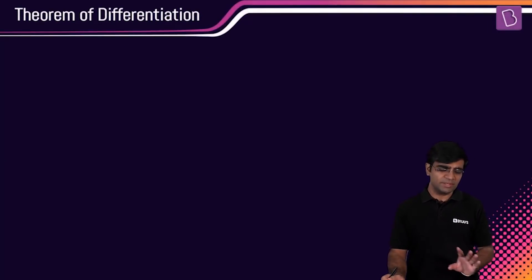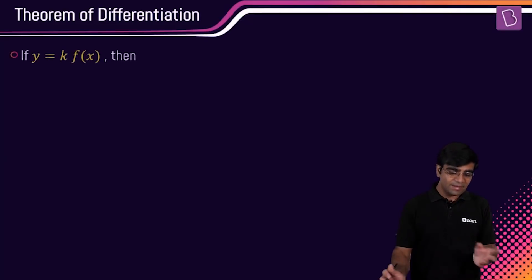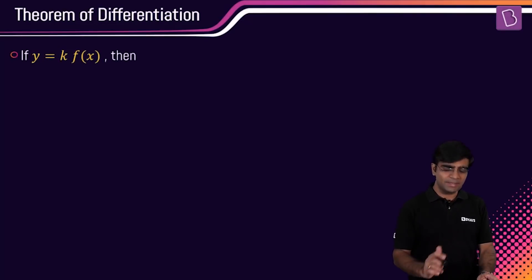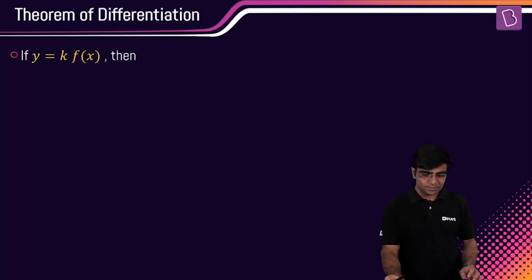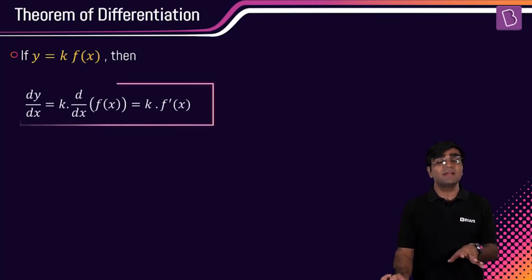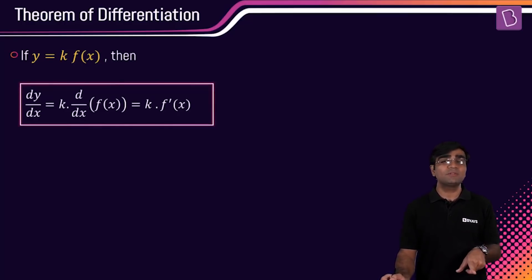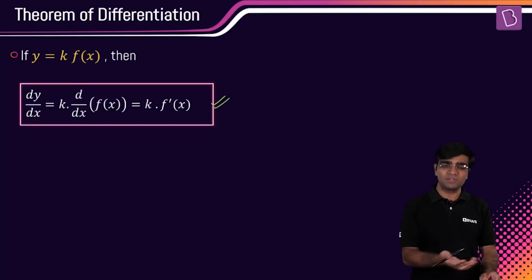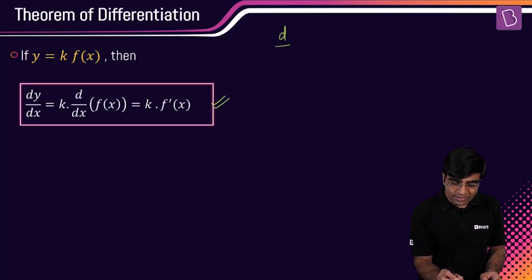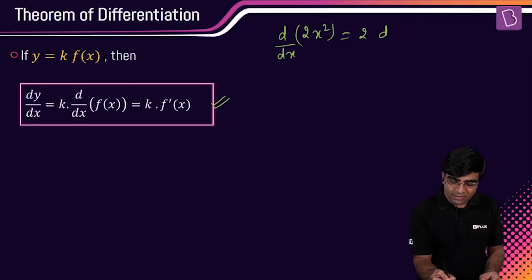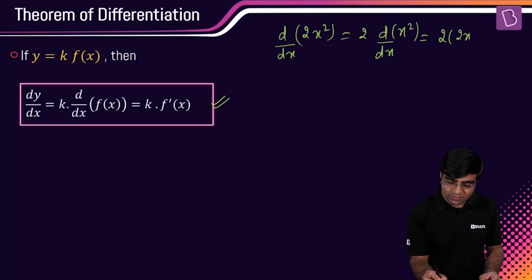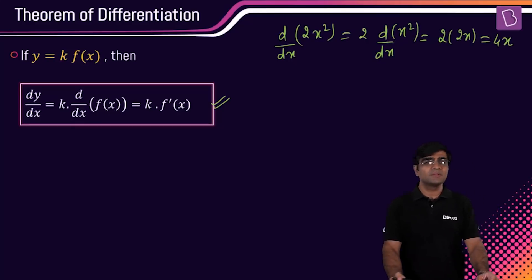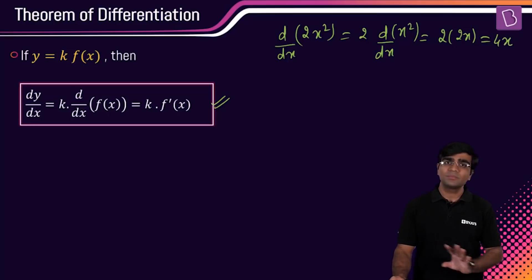The very first theorem says: if y is equal to k times f(x), where k is some constant, then the derivative dy/dx becomes k times f'(x). The constant comes out of the differentiation. For example, d/dx of 2x² — we take 2 out, leaving d/dx of x², whose derivative is 2x, giving us 2 × 2x = 4x. Very simple.